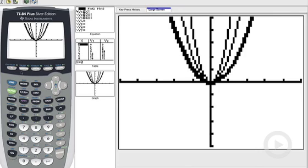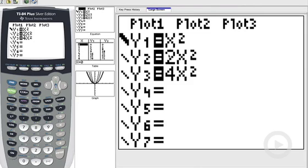What happens when your a value, absolute value, is larger than 1, it makes your graph what we call skinny. That's as opposed to if I use a fraction.